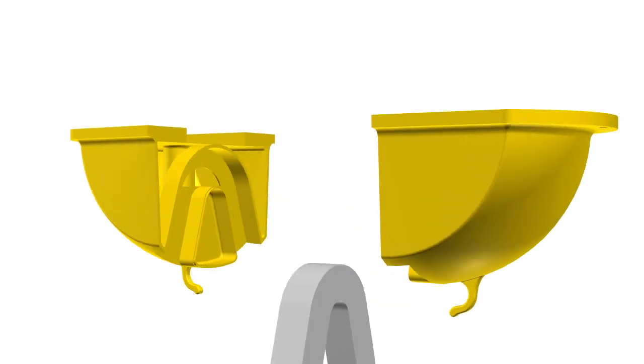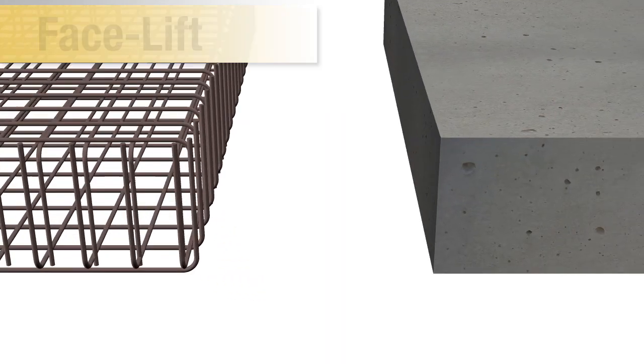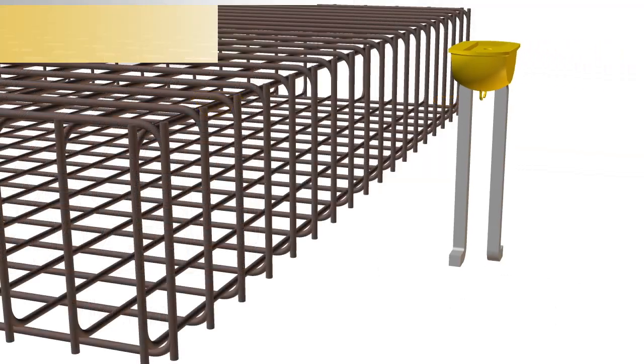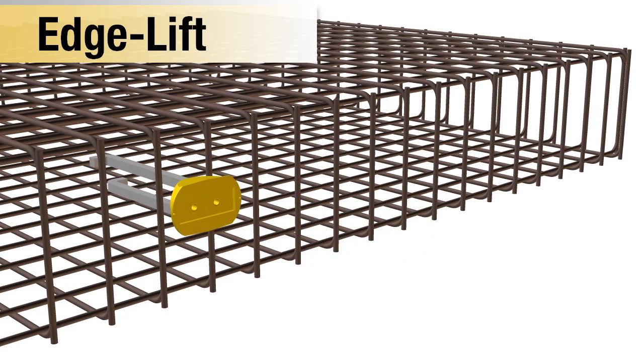Properly assemble the lift anchor within the void former. The facelift anchor and void assembly can either be wet set or tied to the steel reinforcement. The edgelift requires the void former and anchor assembly to be tied horizontally into place.